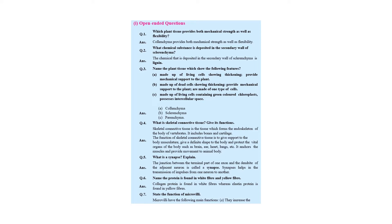As we know from the previous video session, collenchyma is a simple permanent tissue. It provides both mechanical strength as well as flexibility. Then, what chemical substance is deposited in the secondary wall? It is lignin. Name the plant tissue which shows: living cells with thickening giving mechanical support — collenchyma; dead cells with thickening giving mechanical support — sclerenchyma; living cells containing green color — parenchyma.